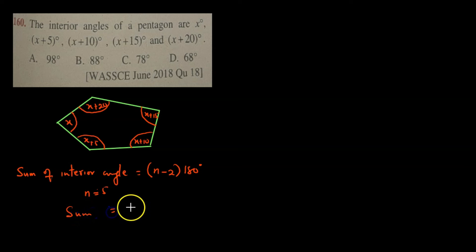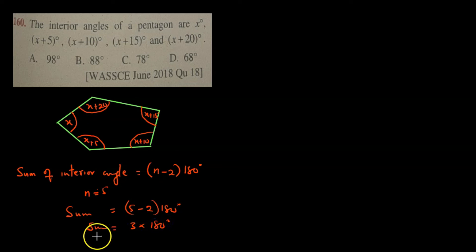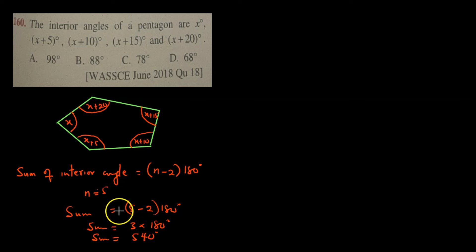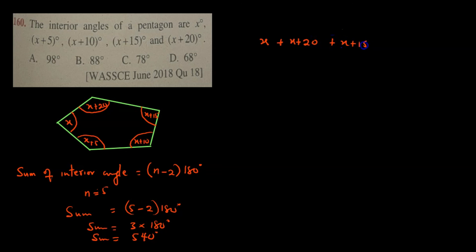Knowing that the pentagon has five sides, the sum of interior angles equals 5 minus 2 times 180 degrees, which equals 3 times 180 degrees, giving us 540 degrees. Therefore, adding all interior angles: X plus X plus X plus 20 plus X plus 15 plus X plus 10 plus X plus 5 must equal 540 degrees. Adding all the X terms gives us 5x, and adding the constants: 20 plus 15 plus 10 plus 5 equals 50.